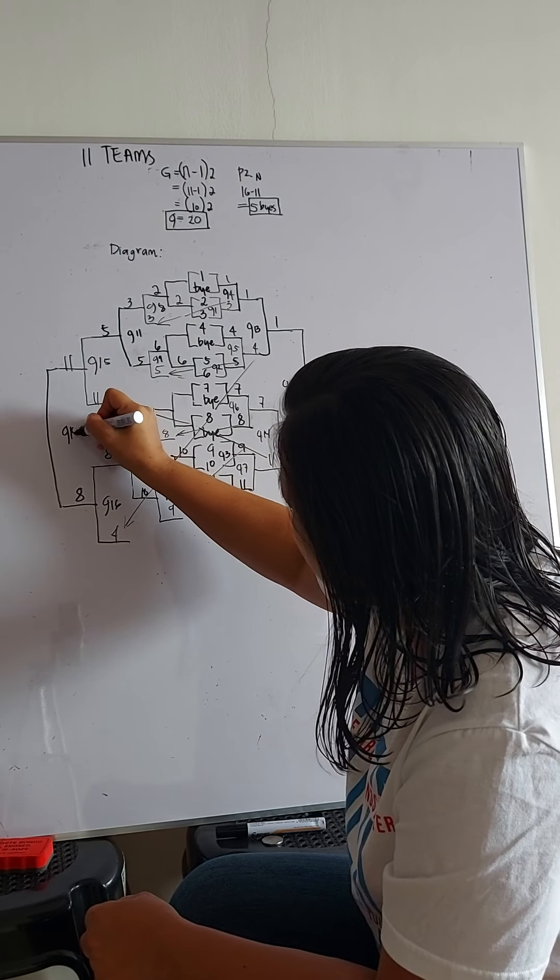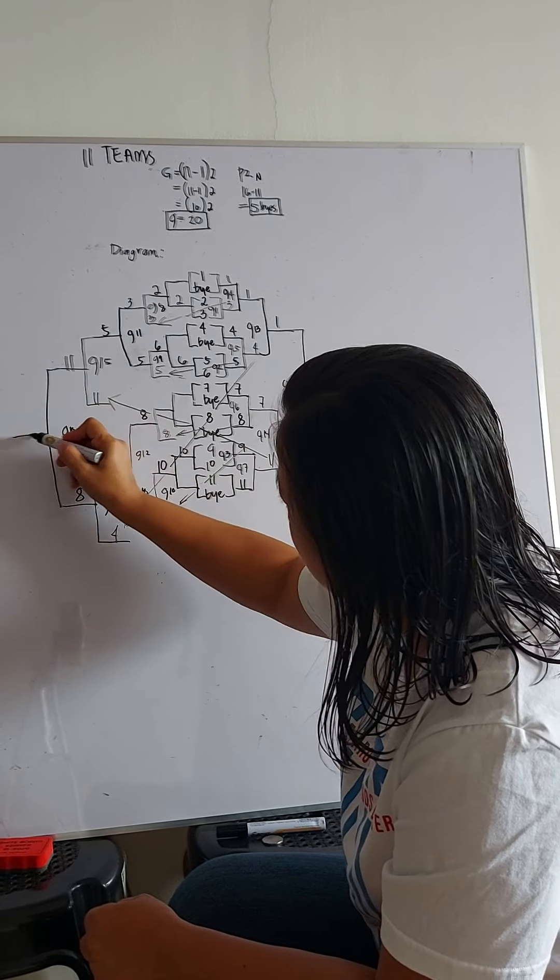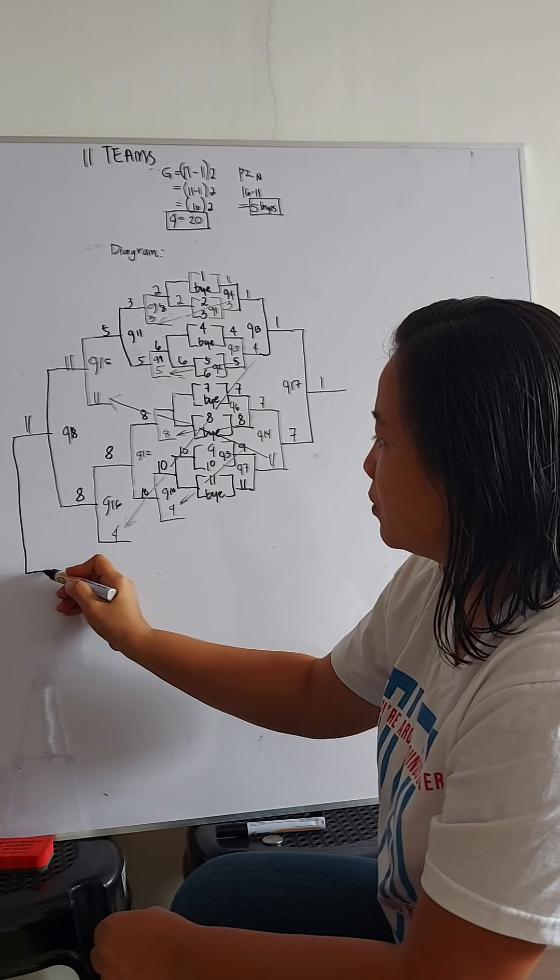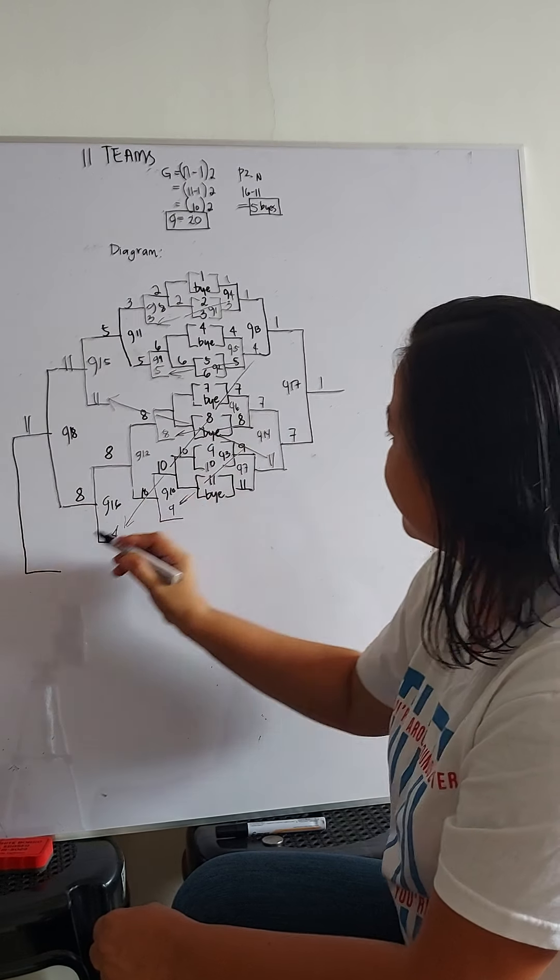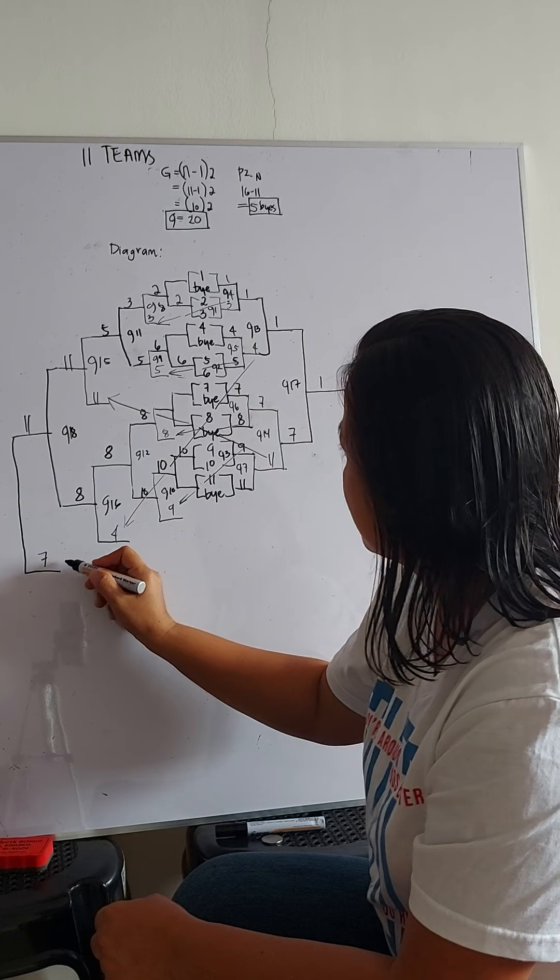This is our game 18. So, supposing we have 11. So, 8 now is eliminated. So, we still have loser from the winner's bracket.